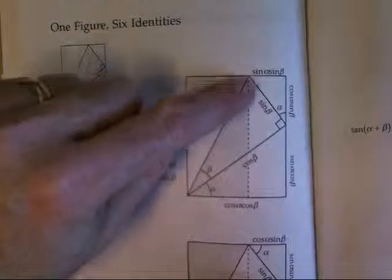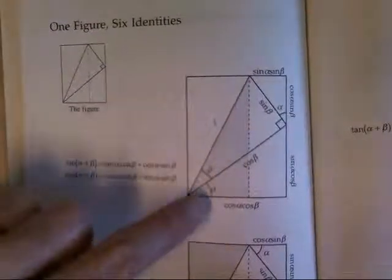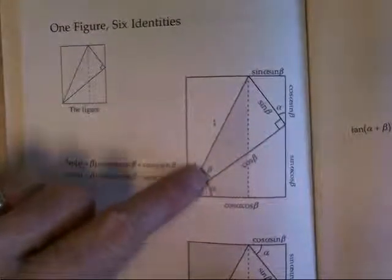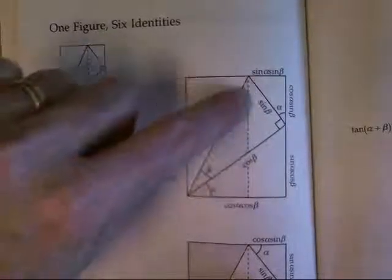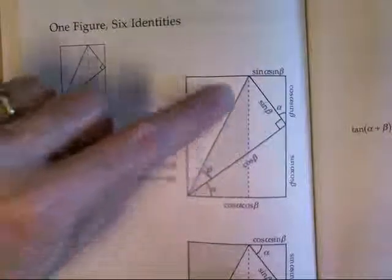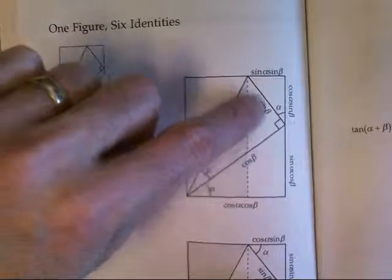So here what we do is this length is one. This is the angle a. That's the angle b. We notice that this is the cosine of a plus b. That's the sine of a plus b. And then we look at some smaller pieces.